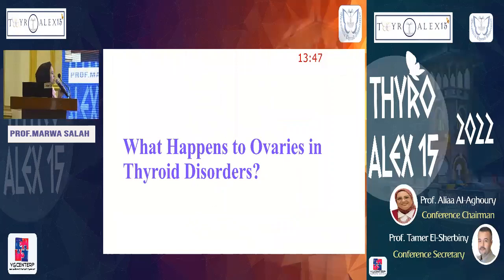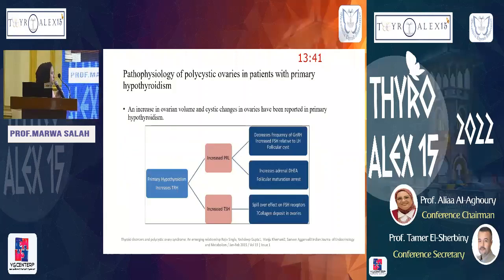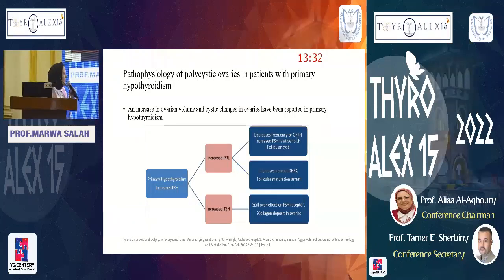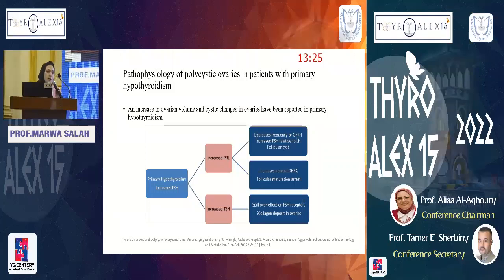What happens to the ovaries in thyroid disorders, mainly hypothyroidism? Patients with primary hypothyroidism were reported to have increased ovarian volume and cystic changes in the follicles. This is believed to be due to increased levels of prolactin and TSH in hypothyroid patients, both of which stimulate FSH, leading to follicular stimulation of the ovarian system.